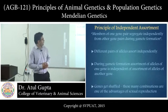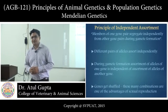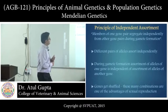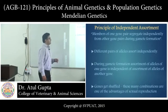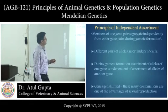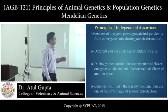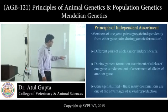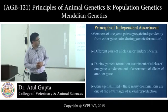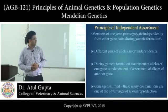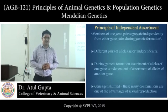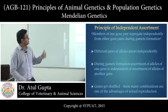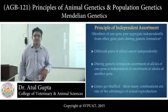Mendel's second principle is the principle of independent assortment. It states that members of one gene pair segregate independently from each other during gamete formation. Different pairs of alleles assort independently — the assortment of alleles of one gene is independent of the assortment of alleles of another gene. This principle applies when we take two or more traits at a time.